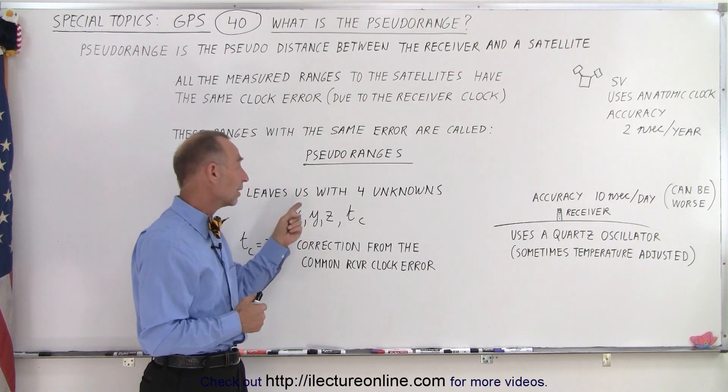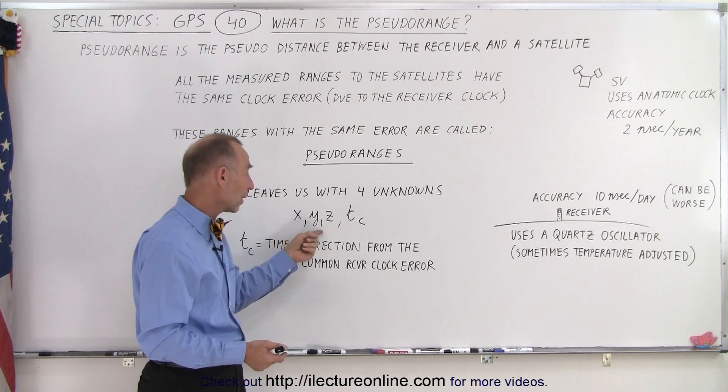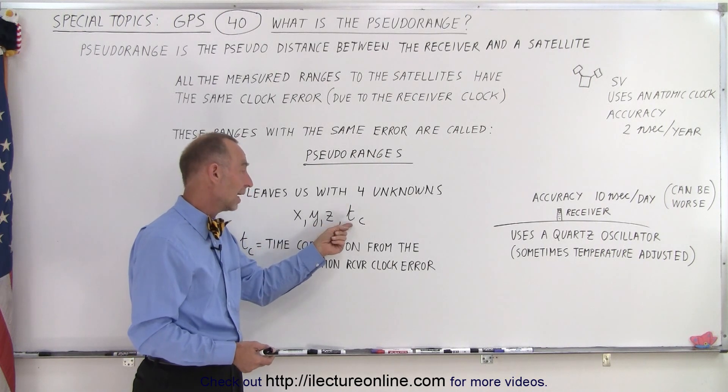And then with the combination of the pseudo ranges, if we have at least four of those, we can then use four equations of four unknowns techniques to calculate for X, Y, and Z, which gives us the exact position in space or the exact position of the receiver, and we can find the error that way.